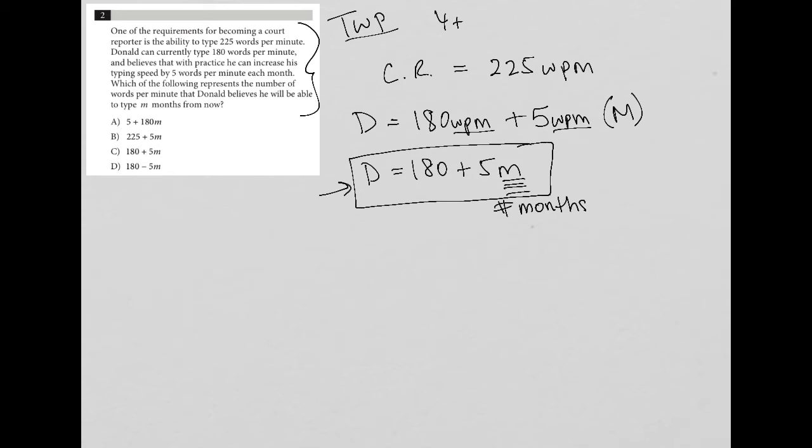This equation represents how many words per minute we expect Donald to be able to type based upon the number of months from his current 180. So that takes me to answer choice C: 180 plus 5 times M. Now we could also use plugging your own number for this.